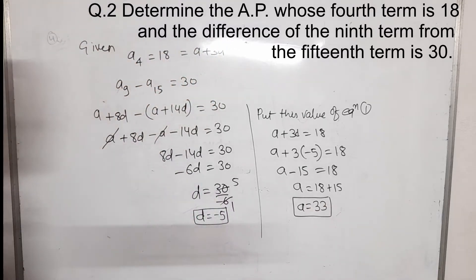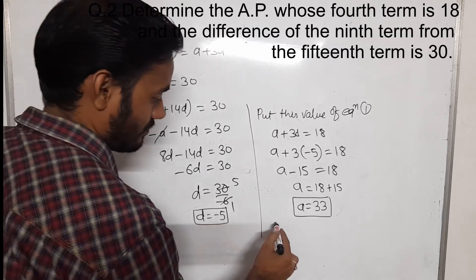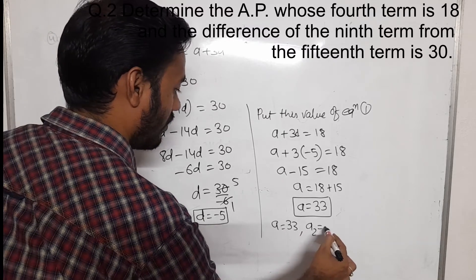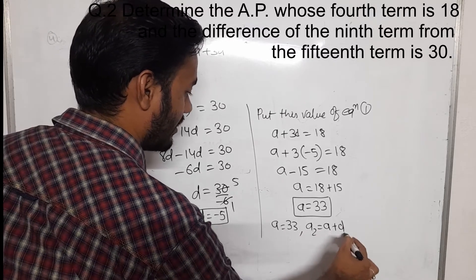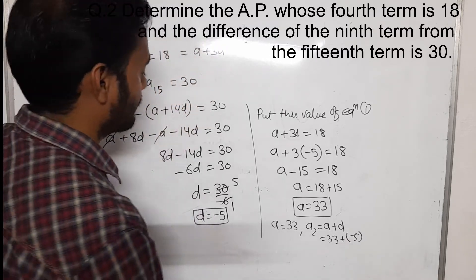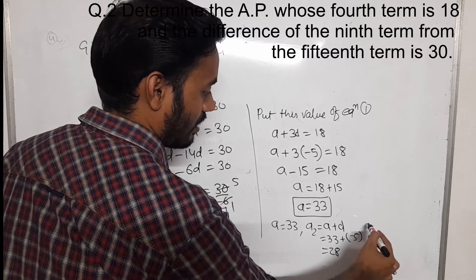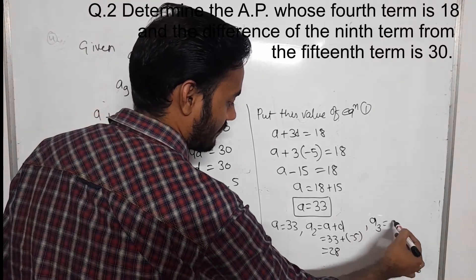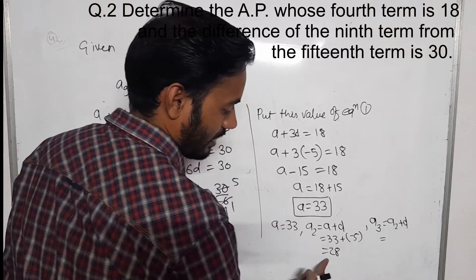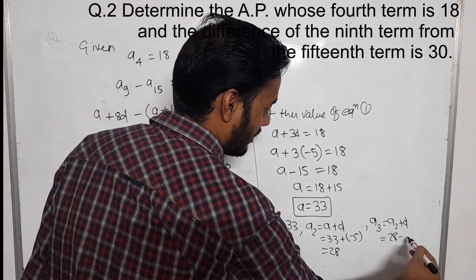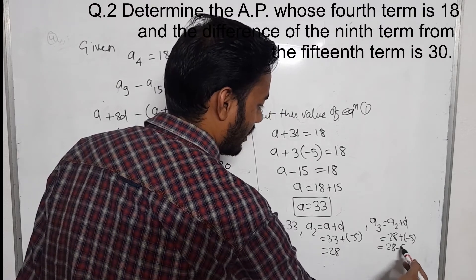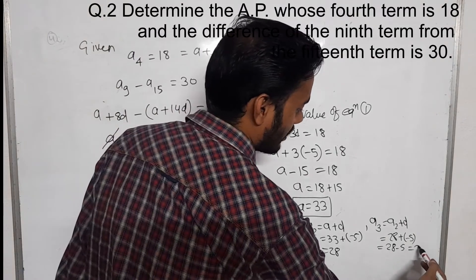Now we find the first three terms. A will be 33. A2 will be A plus D, that is 33 plus minus 5, that comes out to be 28. And the third term will be A2 plus D, that becomes 28 plus minus 5, and 28 minus 5 comes out to be 23.